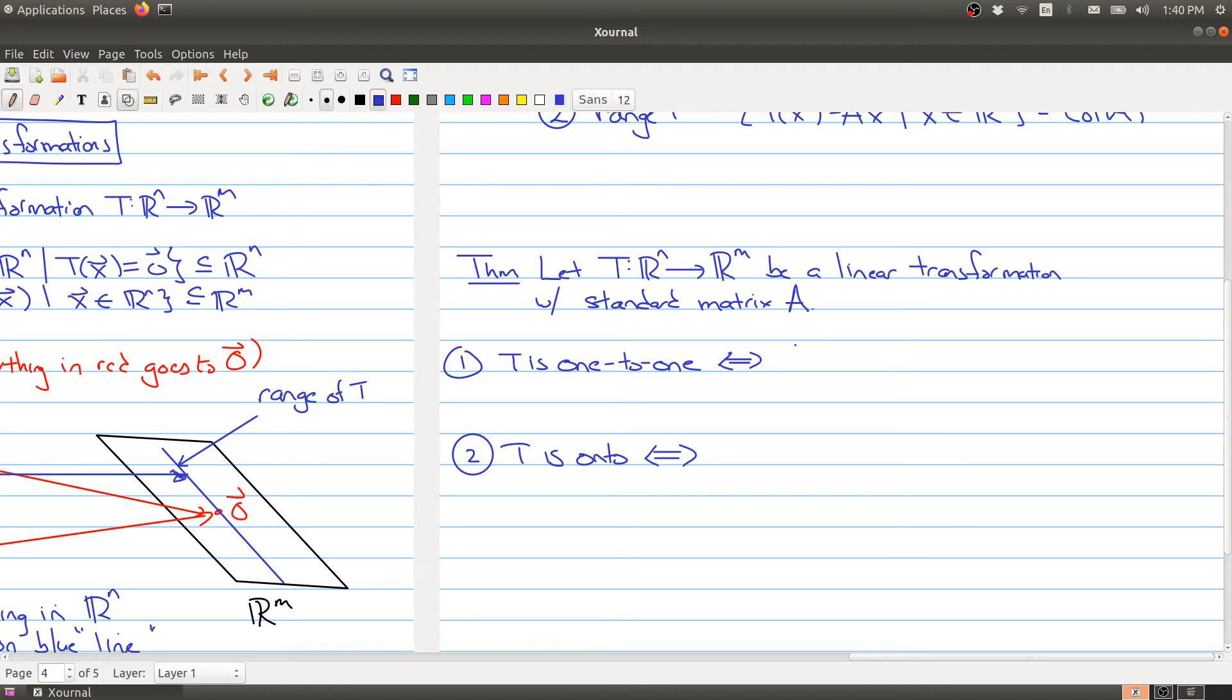So T is one-to-one means that Ax equals zero has only the trivial solution, which is another way of saying that the null space is as small as you can get. So it has to be equal to zero.